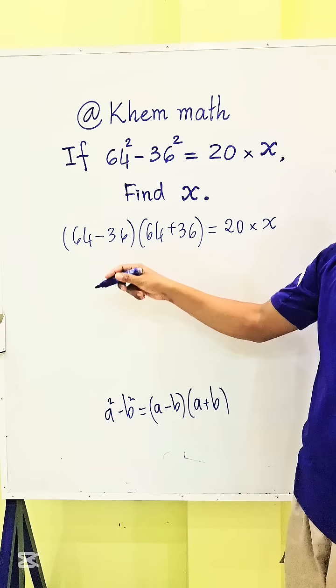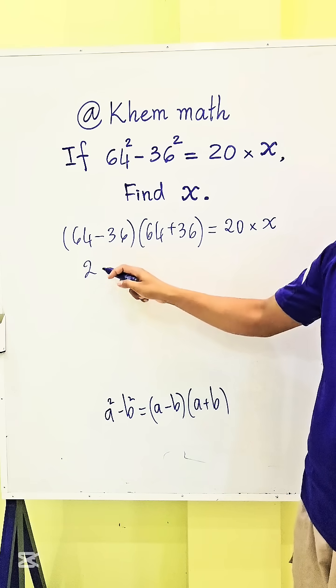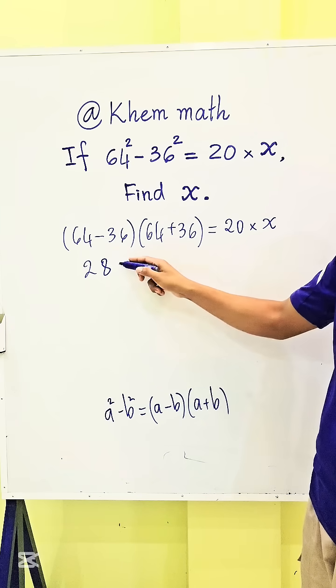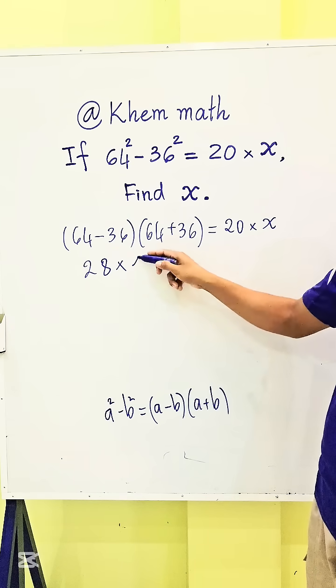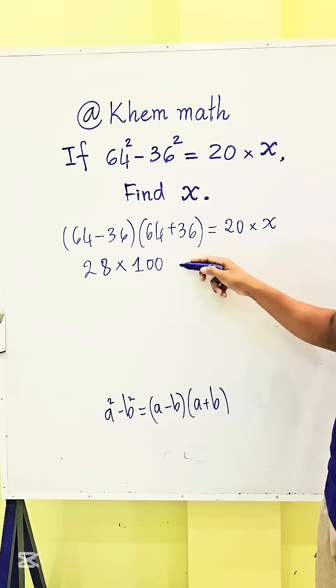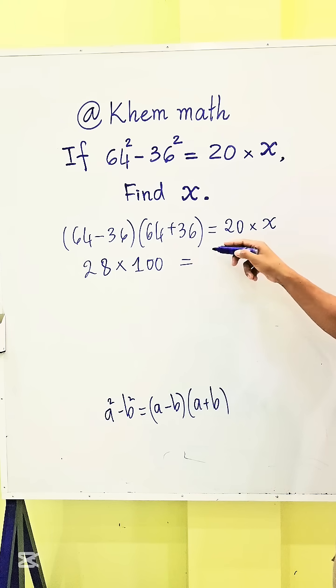And here it equals 28 times 100, which equals 20 times x.